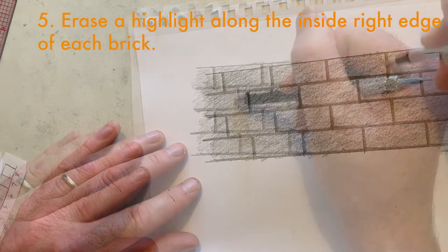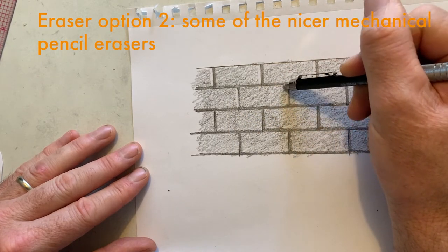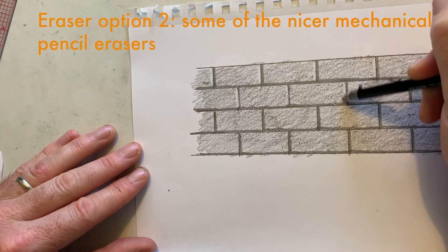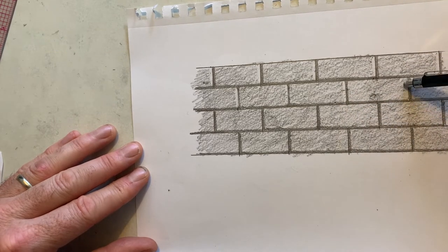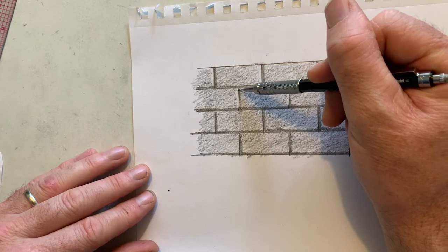And if you don't have the Tombow, then maybe you have a nice mechanical pencil, because a lot of the nicer mechanical pencils have these tiny erasers, and they're great for this kind of thing. And if you accidentally erase some of your original lines or your shadows, go and put them back in.